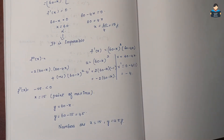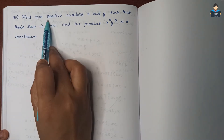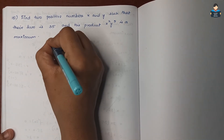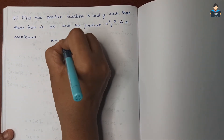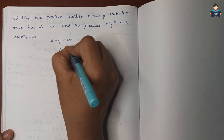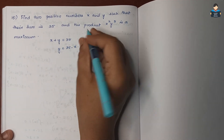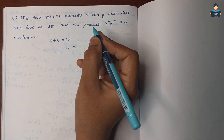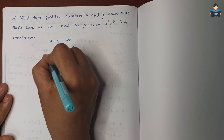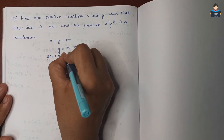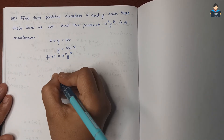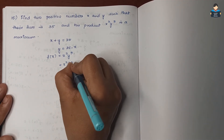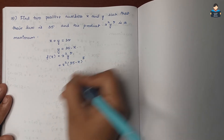Question number 15: Find two positive numbers x and y such that their sum is 35 and the product x²y⁵ is maximum. So x plus y = 35, giving y = 35 minus x. Let f(x) = x²(35 minus x)⁵.